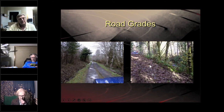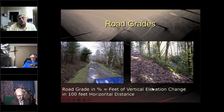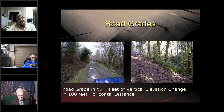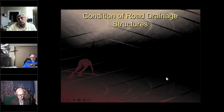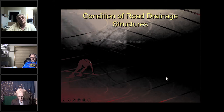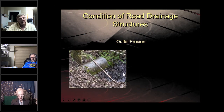Road grades are measured in percent — feet of vertical elevation change per hundred feet of horizontal distance. A flat road grade versus a relatively steep one, around 23%, illustrates the range. If you have a 5% slope, you raise five feet in elevation in a hundred feet of horizontal distance.